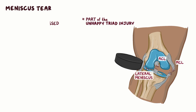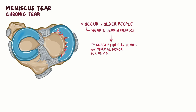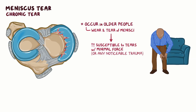In contrast to an acute tear, there are also chronic tears, which usually occur in older people. This is because the wear and tear of the menisci make them more susceptible to tears with minimal force or any noticeable trauma. An elderly person might tear their meniscus from simply getting up from a chair.